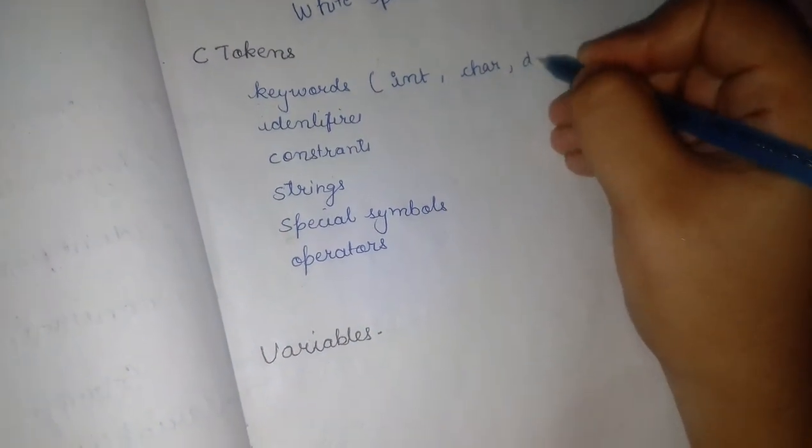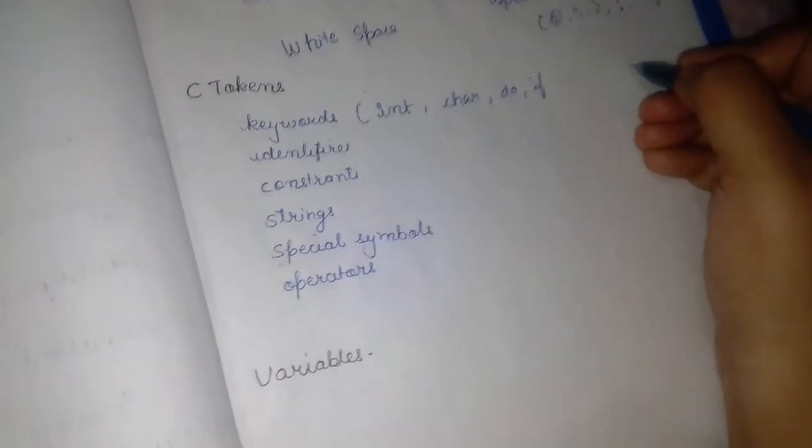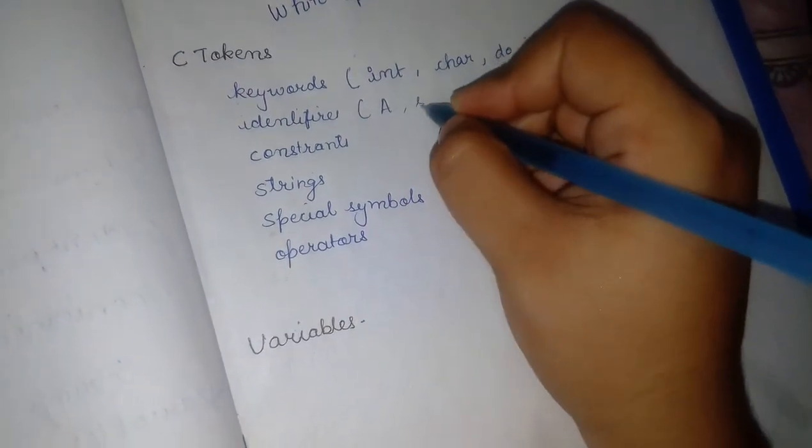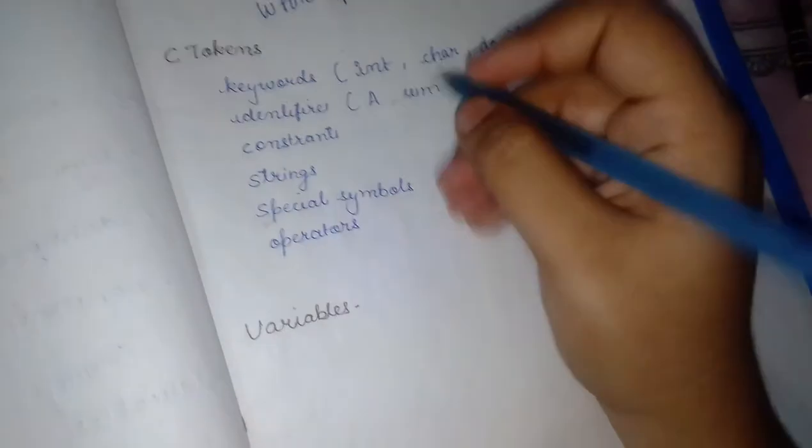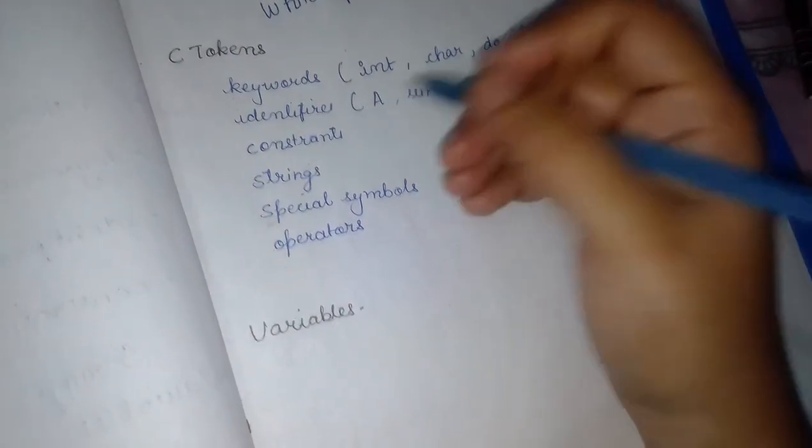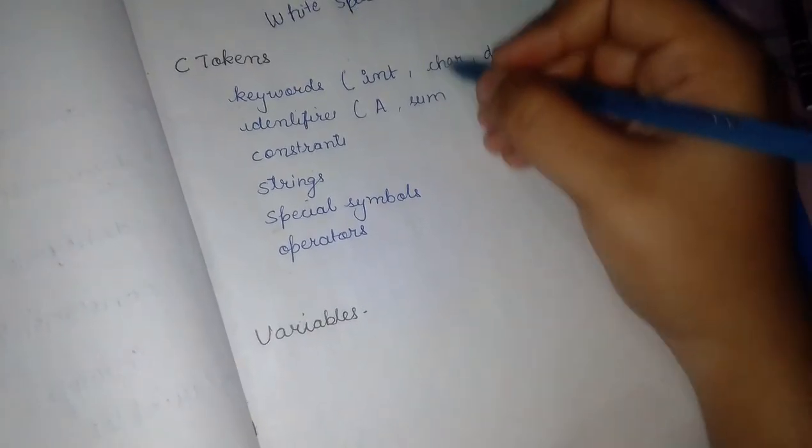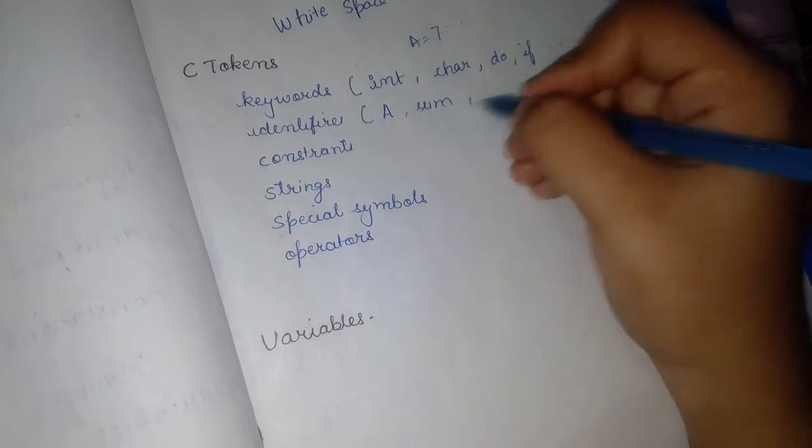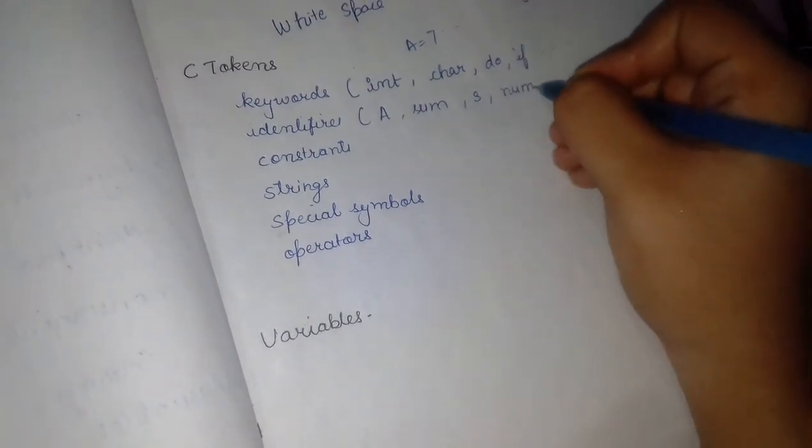Identifiers are names given by user. Whenever we are assigning any value like a equals to 7, or we define a number as num, these are identifiers.